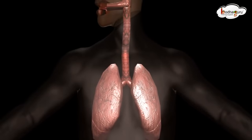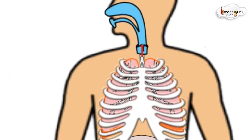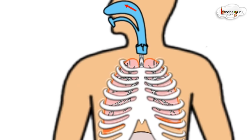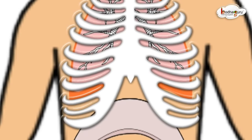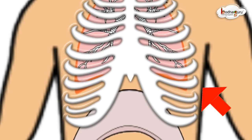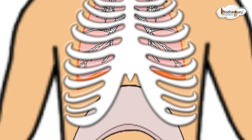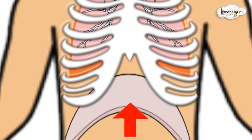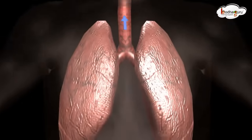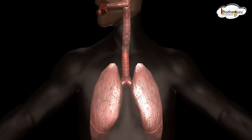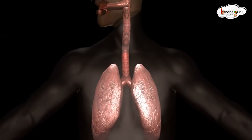Carbon dioxide से भरी वायू को शरीर से बाहर निकालने की प्रक्रिया को Exhalation कहते हैं। Exhalation में ribs नीचे की ओर और अंदर की ओर जाती है। Chest cavity घट जाती है और वायू lungs से बाहर निकल जाती है।